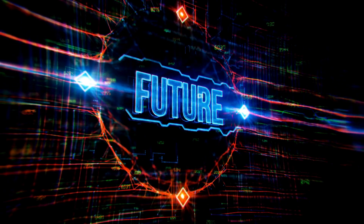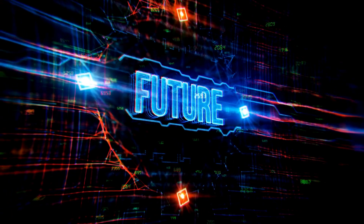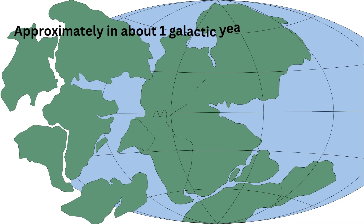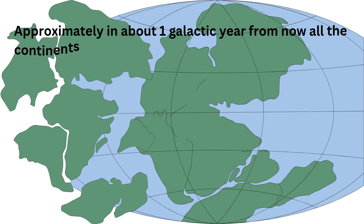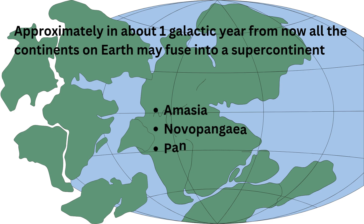Now let's look ahead to the future. Approximately one galactic year from now, all the continents on Earth may fuse into a supercontinent. Three potential arrangements of this configuration have been dubbed Amazia, Novo Pangea, and Pangea Ultima.